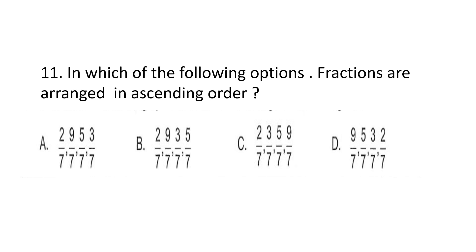Question number 11. In which of the following options are fractions arranged in ascending order? Ascending order means increasing order. We can see that denominators are the same in all numbers — all options have denominator 7. So we check the increasing order of numerators. In option A: 2, 9, 5, 3 — not increasing order, cancelled. Option B is also incorrect. Option C is our answer — numerators are 2, 3, 5, 9, all in ascending order.